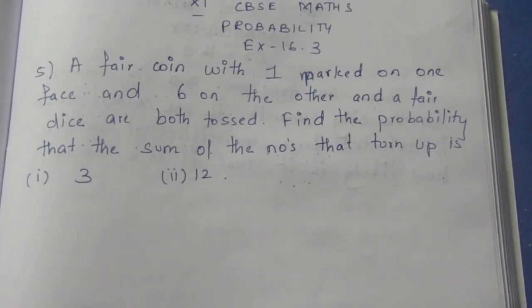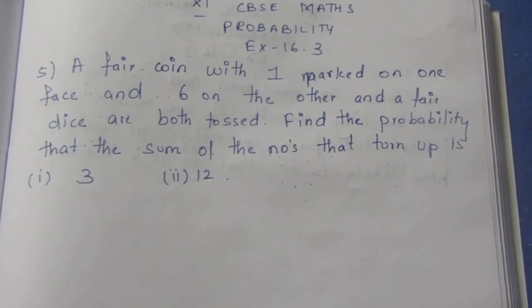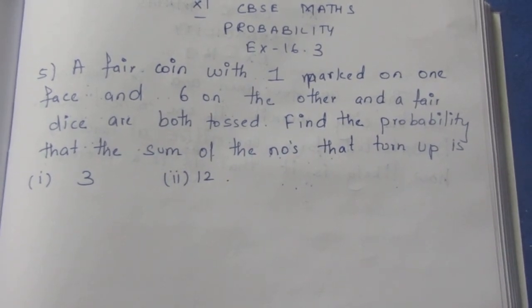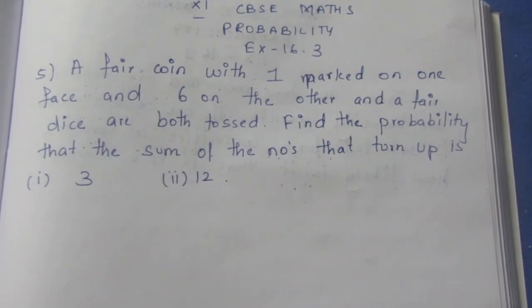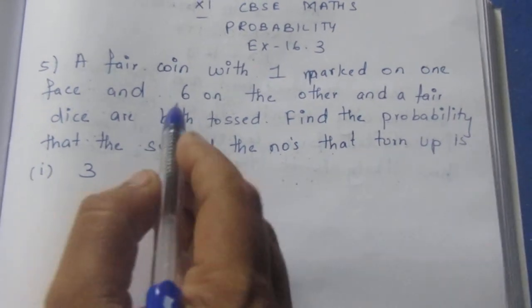Let's see the question. A fair coin with 1 marked on one face and 6 on the other. One side is 1 and the other side is 6.